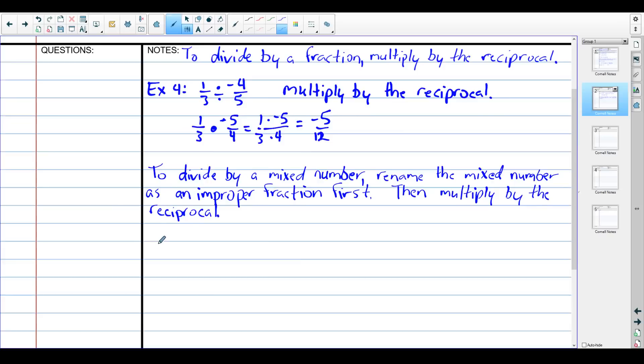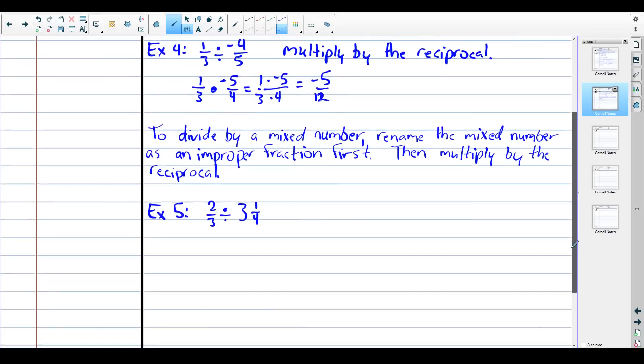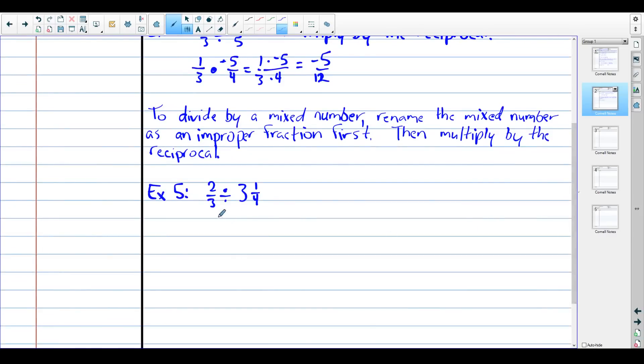Our last example, and then we're done. Example five: two thirds divided by three and a quarter. Someone says what is this torture? You don't even know, this is baby math. Rewrite the mixed number as an improper fraction. Three and one fourths: three times four is twelve, plus one more is thirteen. This becomes thirteen over four. Two thirds stays the same.